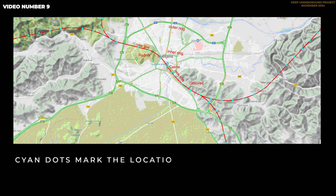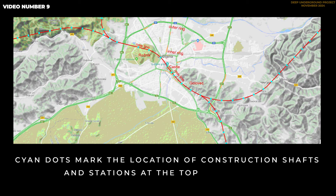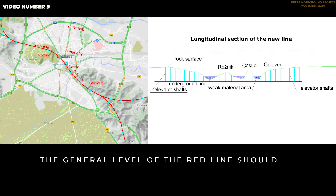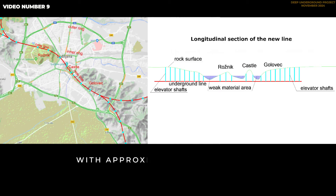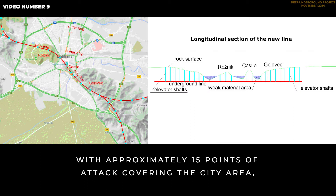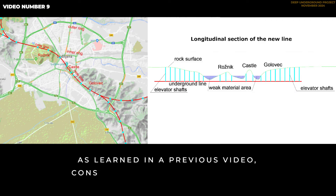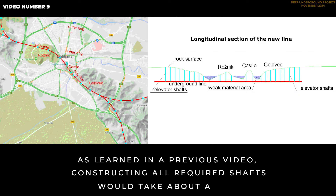Cyan dots mark the location of construction shafts and stations at the top of the hills, generally spaced one kilometer apart. The general level of the red line should be less than 300 meters below the ground, with approximately 15 points of attack covering the city area. Considering the one kilometer distance between points, as learned in a previous video, constructing all required shafts would take about a year.